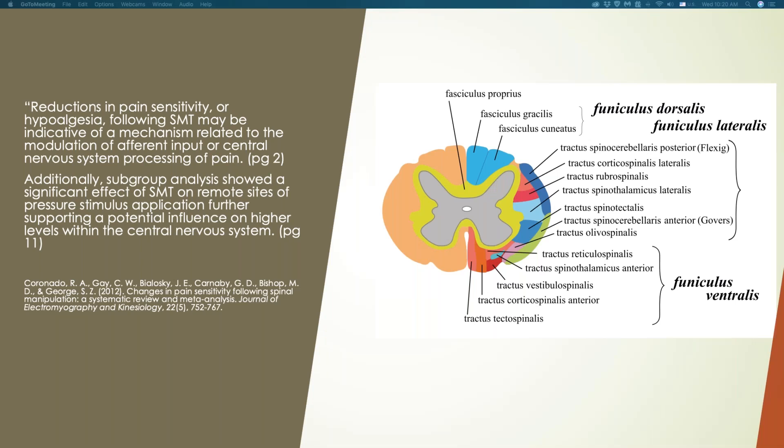As I mentioned a couple slides ago, the pain management component of chiropractic really started in 2010, 2011, but it peaked in 2012. This was probably one of the more important reviews. What I have here is the systematic review and a meta-analysis of what did the research up to 2012 really talk about spinal manipulation and pain management. That's why when people get adjusted, they feel better. The authors had written reductions in pain sensitivity or hypoalgesia following spinal manipulation may be indicative of a mechanism related to the modulation of afferent input or central nervous system processing of pain. So it's not just local, we're affecting the brain and the spinal cord. Subgroup analysis showed a significant effect of spinal manipulation therapy on remote sites of pressure stimulus, further supporting a potential influence on higher levels within the central nervous system.